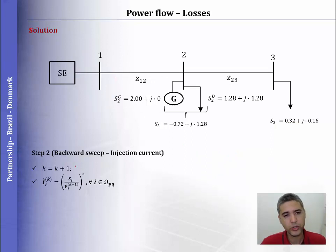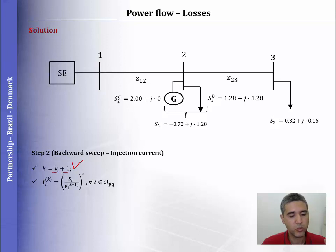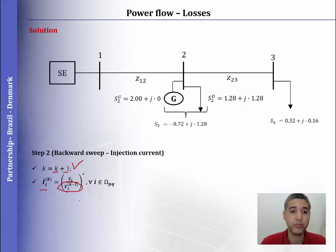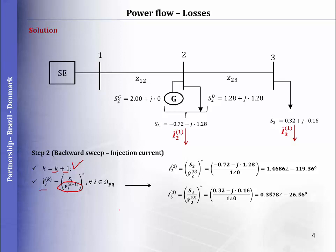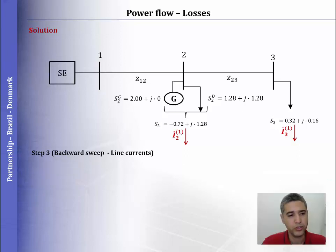In order to compute the voltage for the first iteration, we set k equal to k plus 1, so now we are at iteration 1. We then compute the current by using the voltage of the previous iteration — iteration 0. Note that in this case it doesn't matter if we compute first the current at node 2 or 3; we can compute either order.